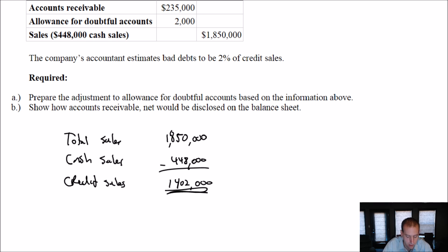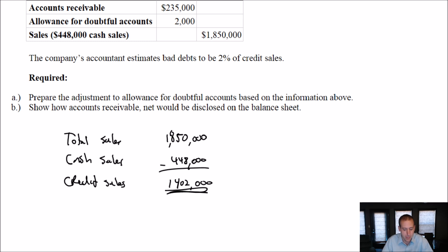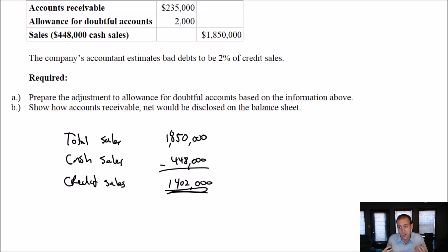In other words, if I sell stuff, I'm either selling it for cash or for credit. Selling for cash means we get the money right away. If I'm worrying about my bad debts — what debts are going to go bad? I don't worry about my cash sales. Cash sales are irrelevant to bad debts. They're never going bad because I'm always going to collect the money.